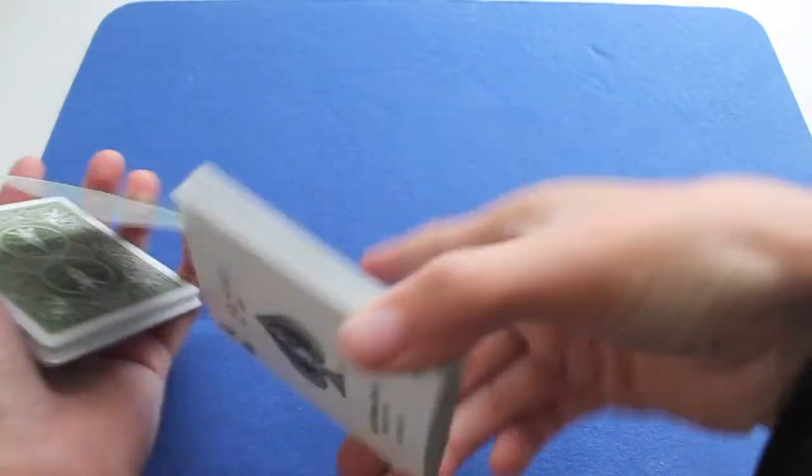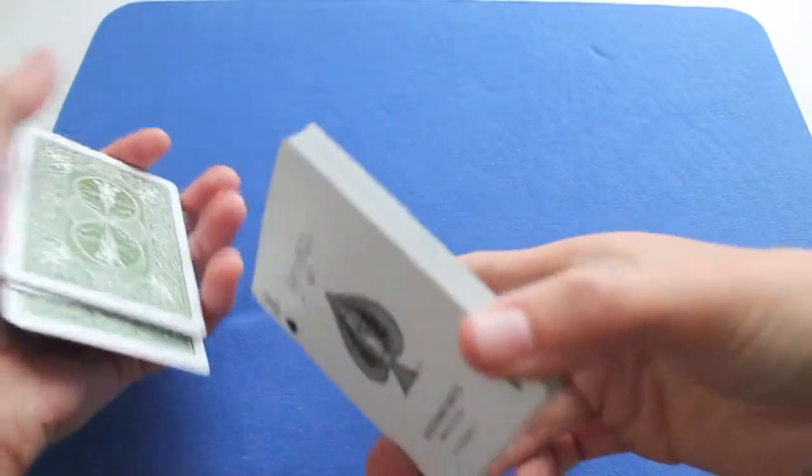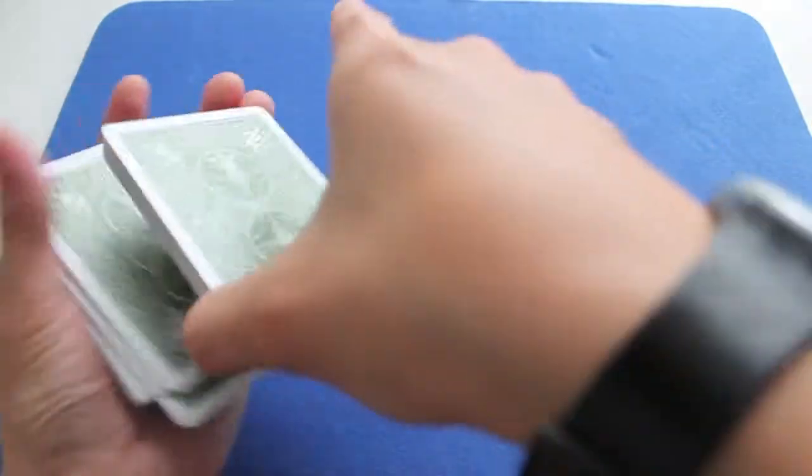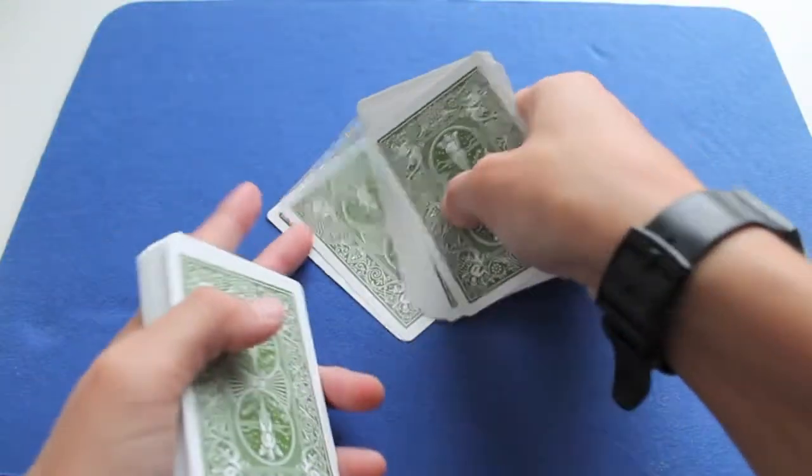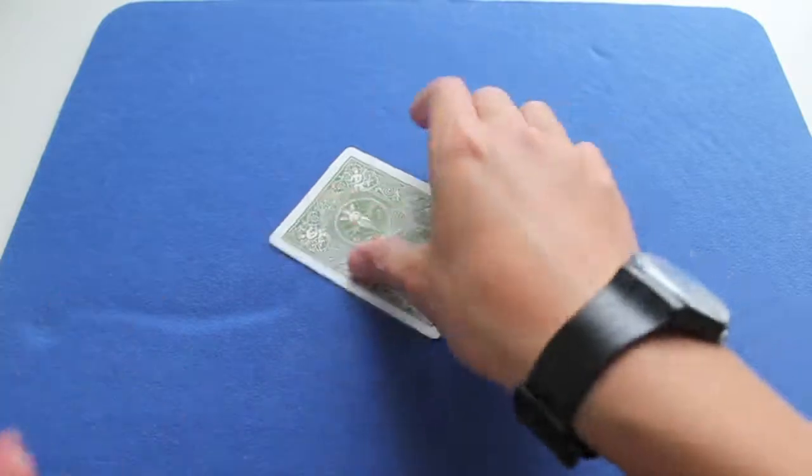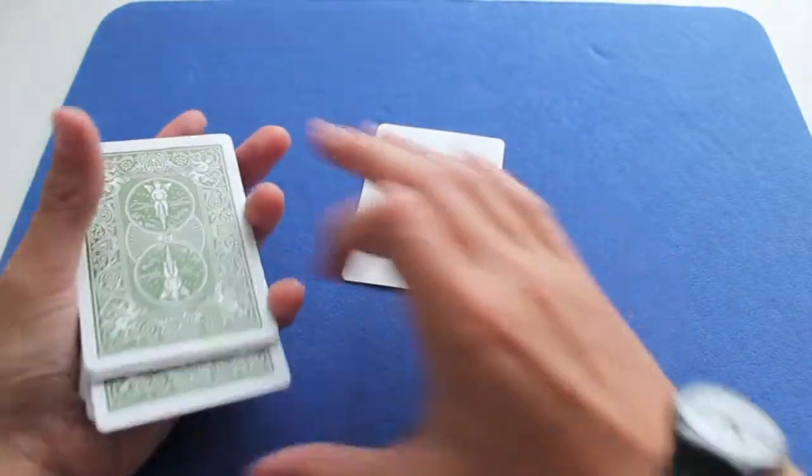And you tell them to say stop whenever they want. And you notice that, if I do it like this, it's always the same bottom card. So they say stop whenever they want, like there. And it's really called the Ace of Spades. So that was the Hindu Force.